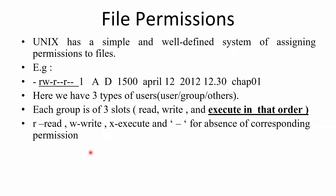In this video lecture we will discuss file permissions. Unix has a simple and well-defined system of assigning permissions to files. The term permission or access rights indicates what action a user can perform on a file. The action can be to view, change, and execute the contents of a file.